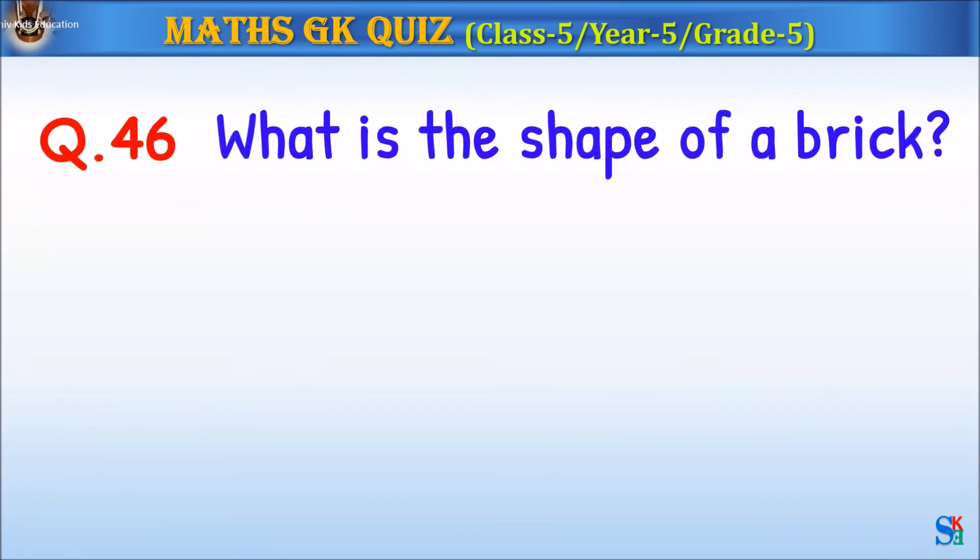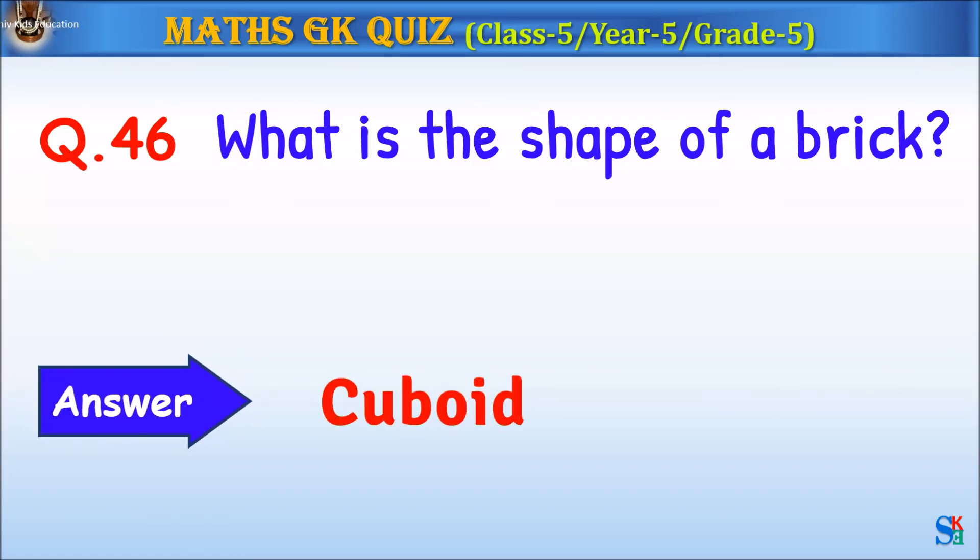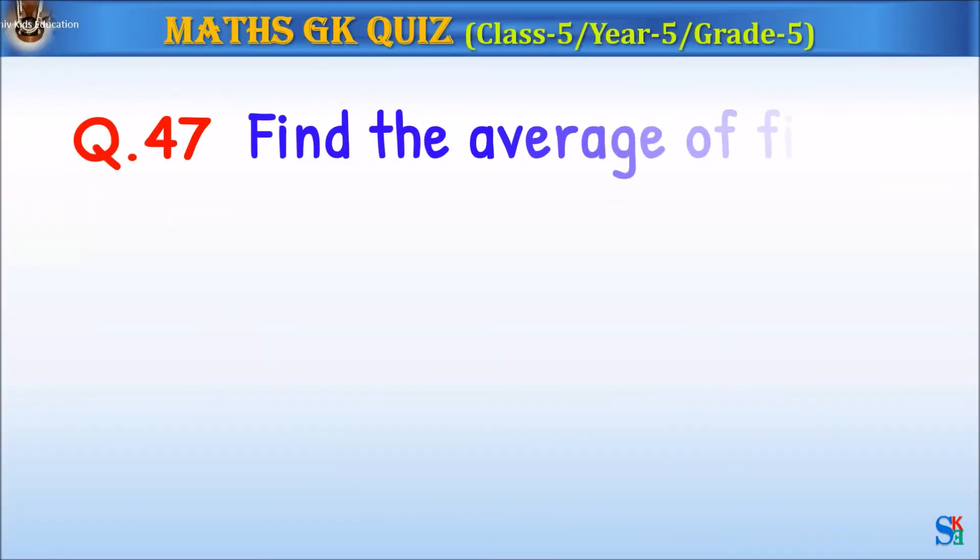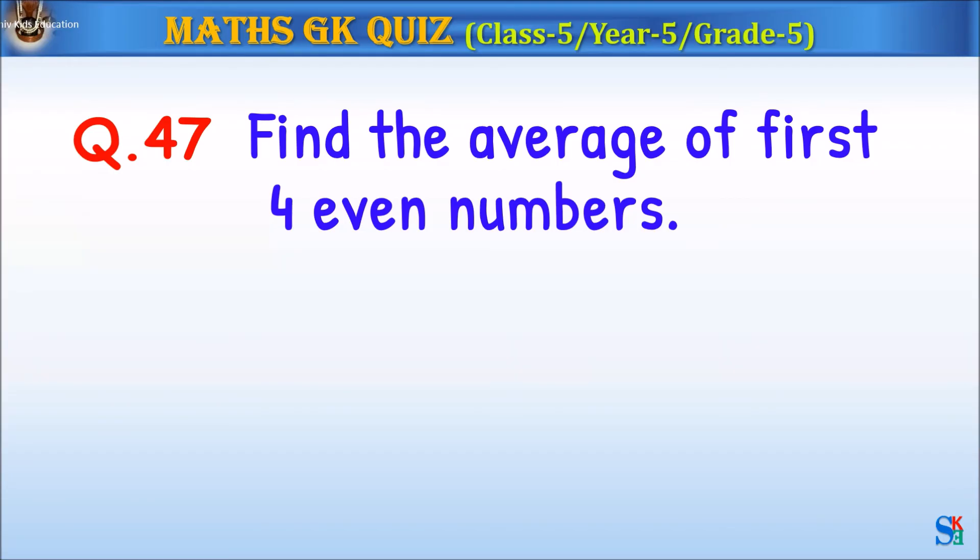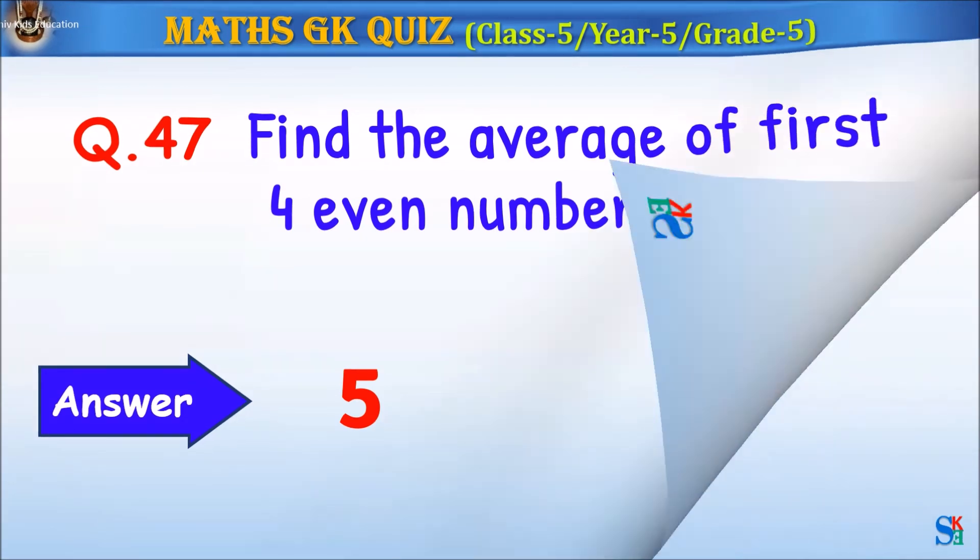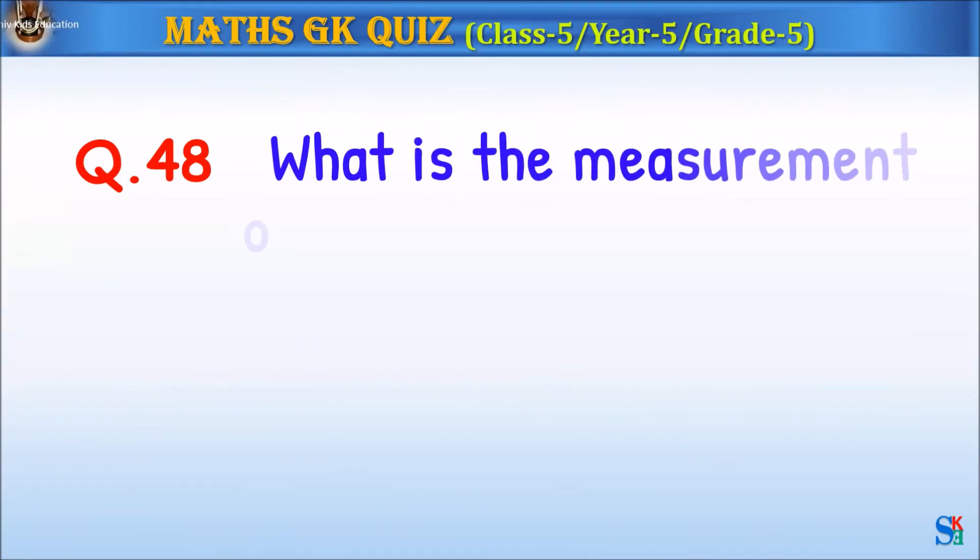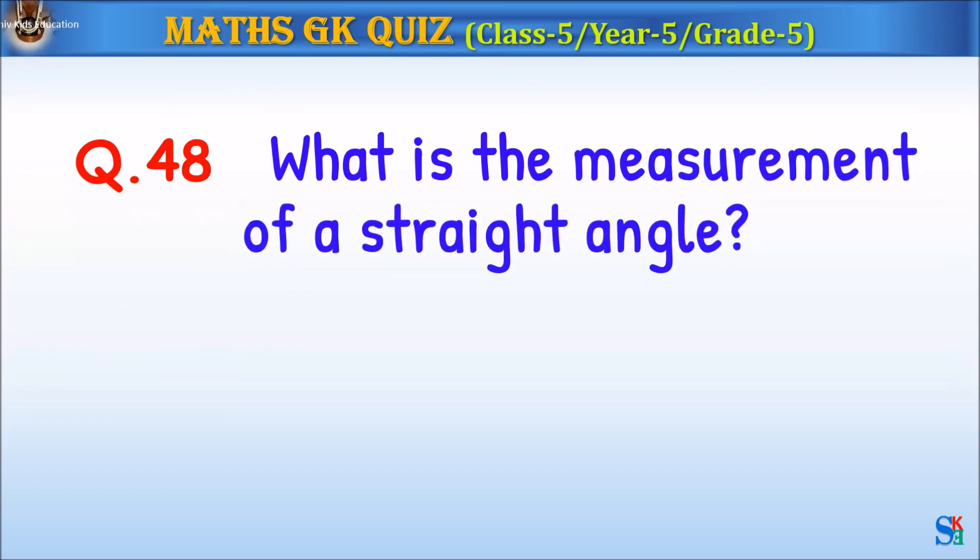Question 46: What is the shape of a brick? The answer is cuboid. Question 47: Find the average of first four even numbers. The answer is 5.